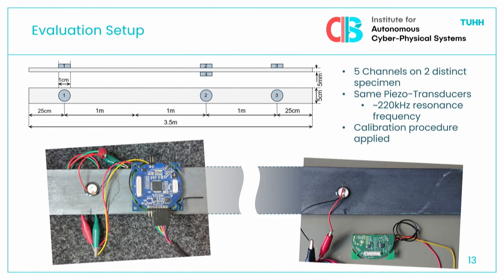We also implemented a whole packet-based communication scheme to see how well that works. We tested five channels on two different specimens — for example, one specimen is up to 3.5 meters long, the longest channel is 3 meters apart, and there are several transducers on the specimen. For all of them we tested how well communication works, and on every channel we applied our calibration procedure to choose the best load impedances.